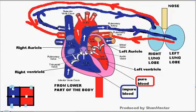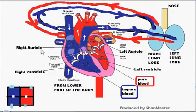The two chambers at the top are called auricles: right auricle and left auricle. The two at the bottom are called ventricles: left ventricle and right ventricle.